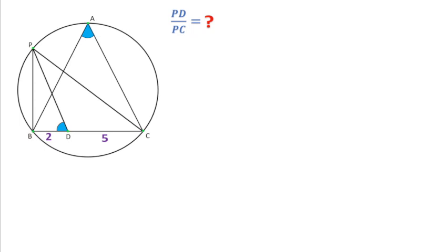Welcome to Definition. In this figure the length of BD is 2 units and the length of CD is 5 units. This blue angle and this blue angle both are equal. Then we have to find the ratio of PD over PC.